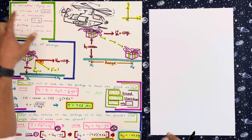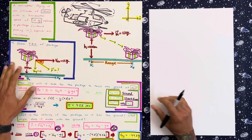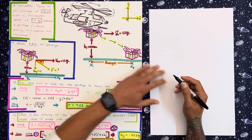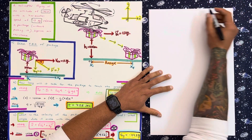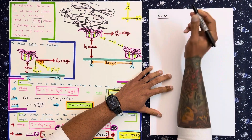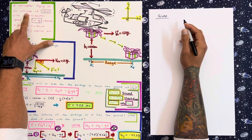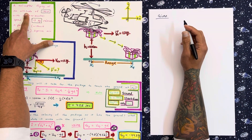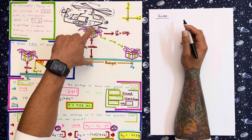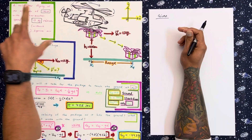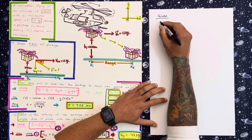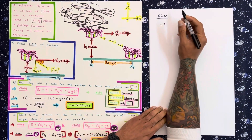Let's take it from the top. A helicopter is flying at an altitude of 100 meters. So let's write our given information. It says altitude — that's a key alarm word mentioning height. The helicopter is flying at 100 meters, so H initial, or Y initial, is equal to 100, because initially we're starting up there.